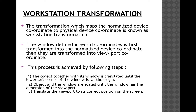In the workstation transformation, there are three steps: first, the object together with its window is translated until the lower-left corner of the window is at the origin; then the object and window are scaled until the window has the dimensions of the viewport; and then we translate the viewport back to its correct position on the screen. We will derive the matrices for all three steps.